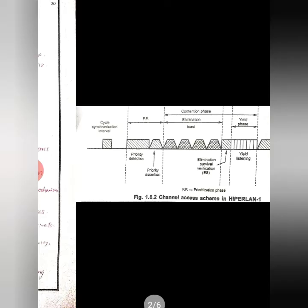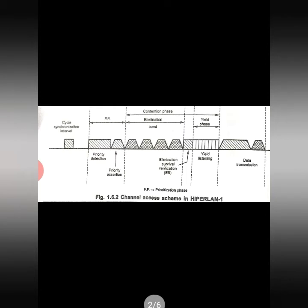Looking at this diagram of the channel access scheme of HiperLAN 1, you can see all three phases: prioritization, contention, and data transmission. The contention phase has two sub-phases: the elimination phase and the yield phase. These two phases come under the contention phase only.